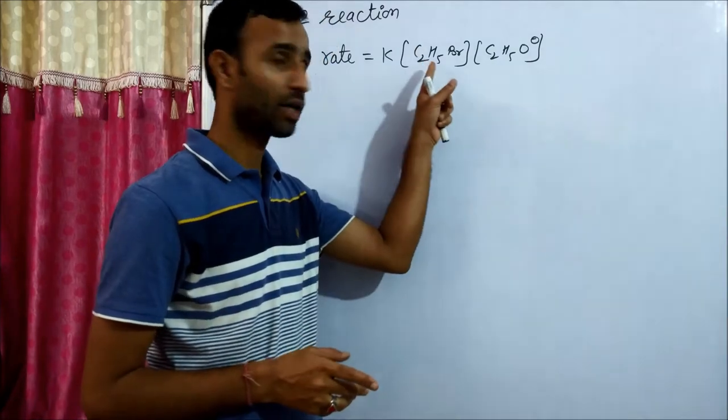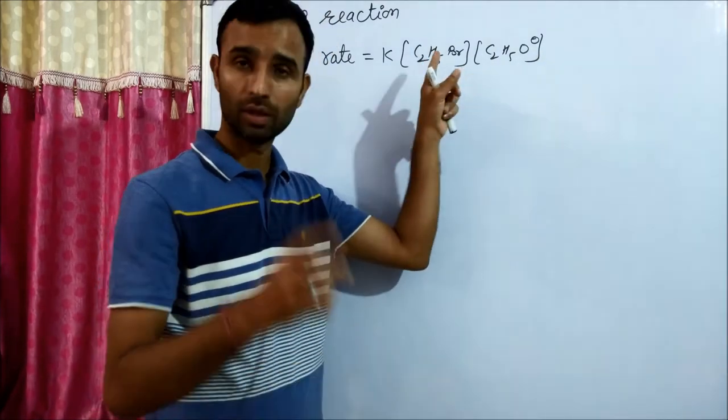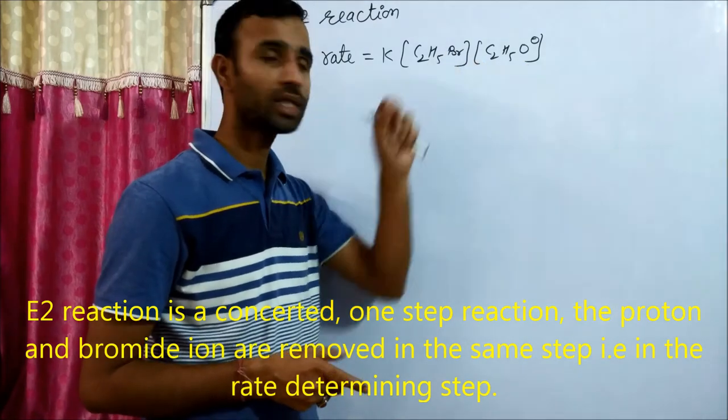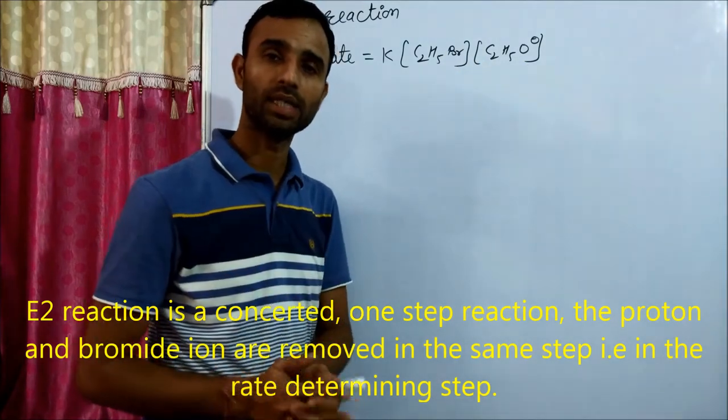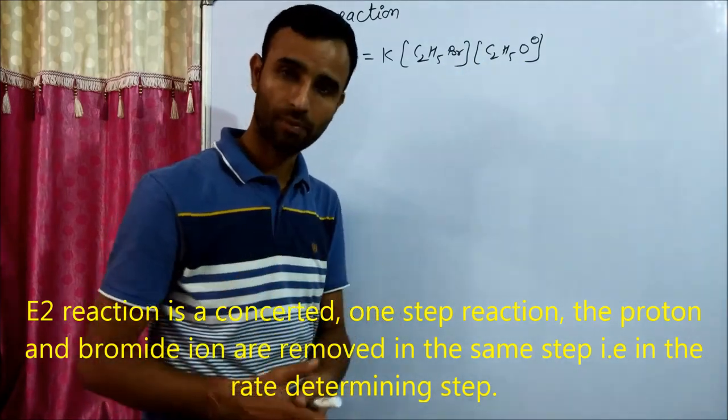Removal of hydrogen as a proton by ethoxide ion as well as removal of bromine takes place in the same step.